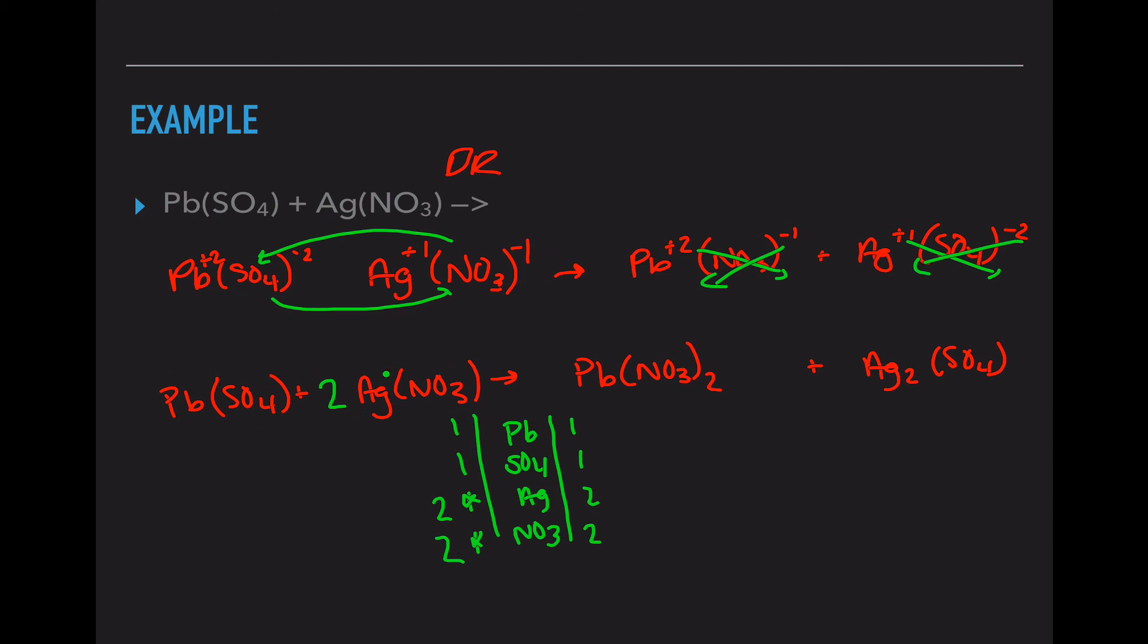Lead sulfate plus silver nitrate yields lead nitrate plus silver sulfate. And it's already balanced and ready to go. So again, I'm going to show you a second video with just examples, and then in class we're going to practice a lot with this. See you then!